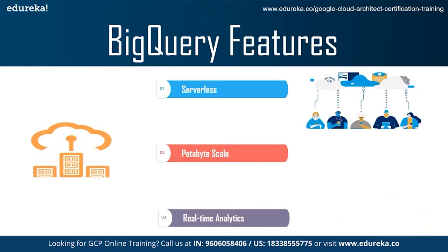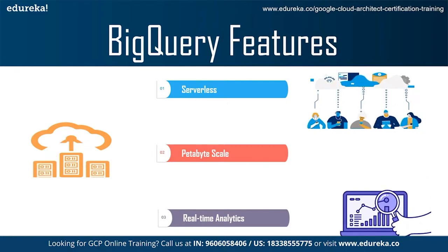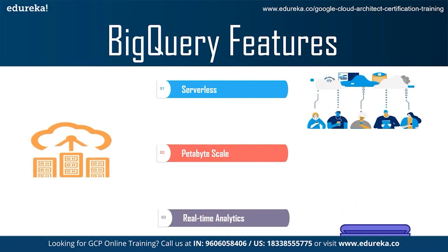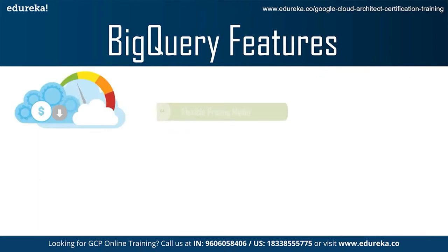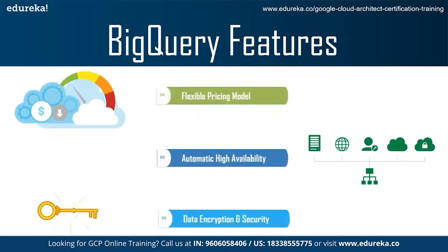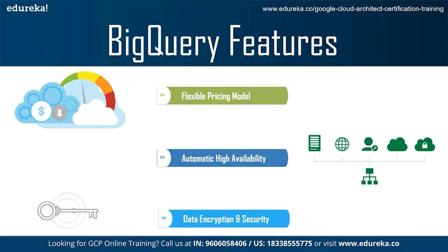Third is real-time analytics. BigQuery's high-speed streaming ingestion API provides a powerful foundation for real-time analytics, allowing you to analyze what's happening now by making your latest business data immediately available for analysis. Fourth is flexible pricing models — BigQuery enables you to choose the pricing model that best suits you. On-demand pricing lets you pay only for the storage and computation that you use. Flat-rate pricing enables high-volume users or enterprises to choose a stable monthly cost per analysis. Fifth is automatic high availability — free data and compute replication in multiple locations means your data is available for query even in the case of extreme failure modes. BigQuery transparently provides durable, replicated storage and high availability with no extra charge and no additional setup.